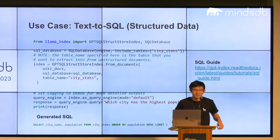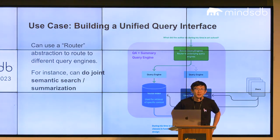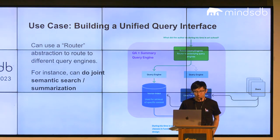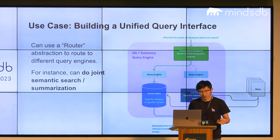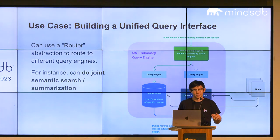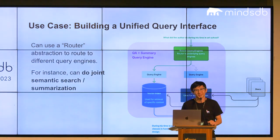Q: About the router — do you have to define the rules yourself or are they inferred from the query? A: The way a router works is it's just a picker. You give it the choices it has access to, some metadata for each choice so the language model has information on what each choice is about. Then you have a question and it outputs a choice. You can do output formatting to make sure the choice is correct.